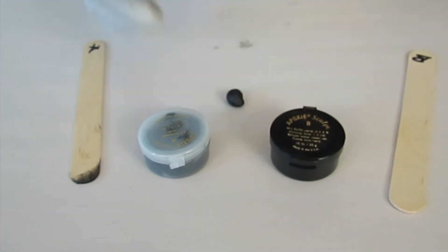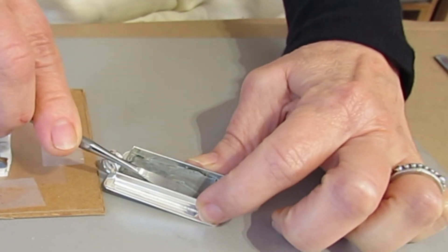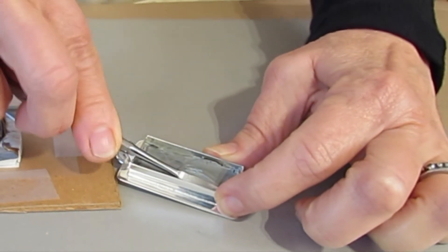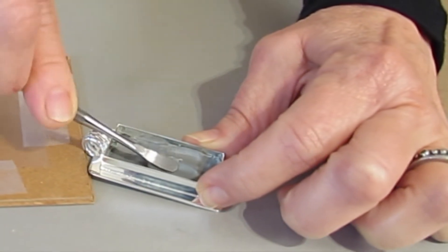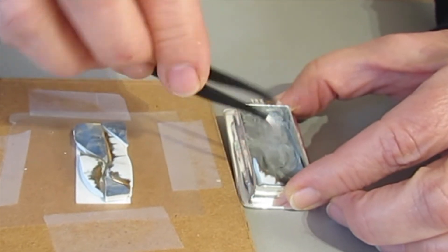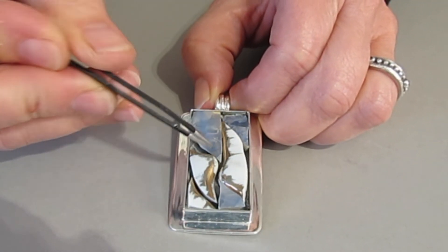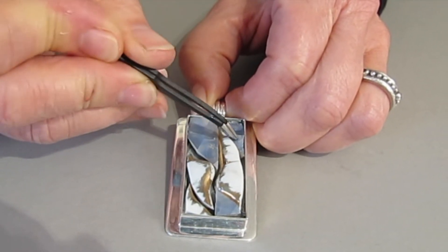Epoxy is activated when parts A and B come into contact. After two minutes, there should be a consistency in color. Working time is one to three hours, and then it cures rock solid in 24 hours. It may be easier to fill the blank with adhesive entirely, allowing for the displacement of the adhesive when you push in the tessera.